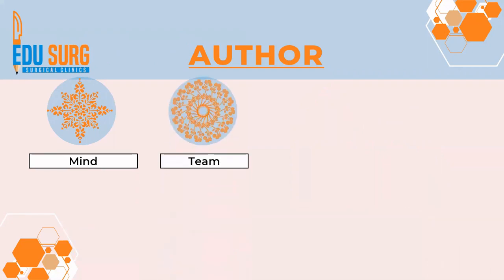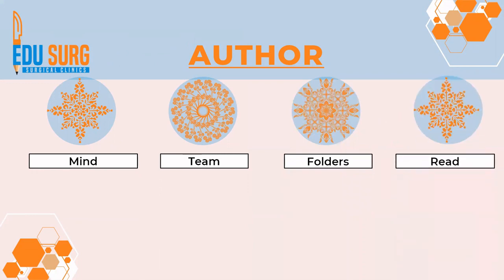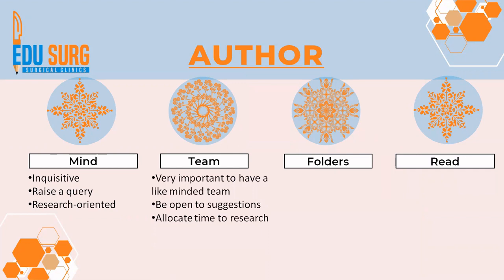Some important author points: having an inquisitive mind is important, and your author team is important. These are four key qualities of an author. Have an inquisitive mind, raise a query on each and every step of your publication journey, and be research oriented. Don't just practice to treat patients — understand that your research is going to be someone else's education in the future. It is very important to have a like-minded team for research.